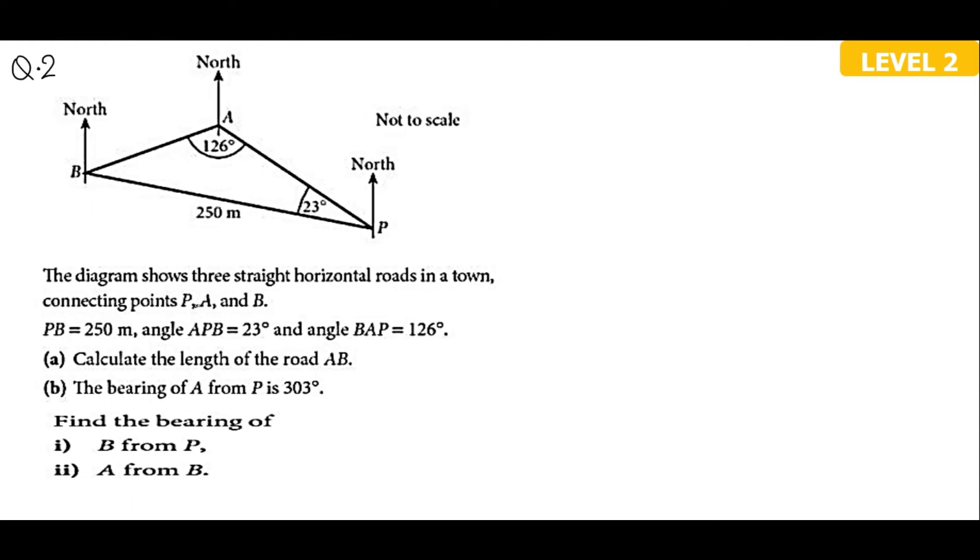Question 2. The diagram shows three straight horizontal roads in a town connecting the points P, A and B. You have P, A and B. PB is 250 meter.